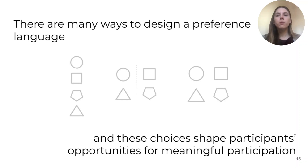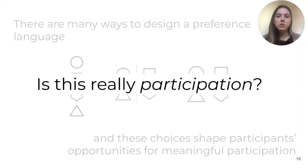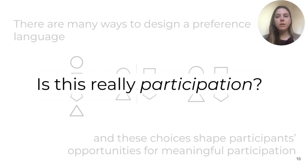Coming back to our core argument, we have shown that the way we design a preference language strongly shapes participants' opportunities for meaningful and equitable participation. But there still remains a question as to whether these systems can really be considered participatory algorithmic decision-making at all. Our findings clearly show that preference elicitation alone doesn't align with the values of participatory processes. For example, in student assignment, families have little to no say over the conditions or structure of their participation or how the system should work overall. Other preference-based systems in the literature somewhat address this problem by integrating other forms of engagement with participants, such as conducting interviews or surveys to define what the preference language should look like. We argue that another opportunity for deepening participation is in co-defining the collective goals that the system should support. However, what our findings really highlight is that the specific configuration of the preference language and the broader opportunities for giving input are critical factors in determining whether a preference-based system is truly increasing people's power and voice in algorithmic decision-making.